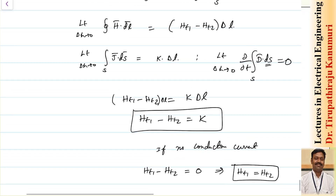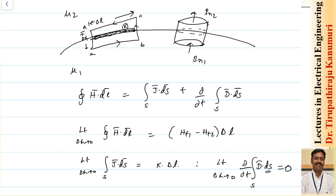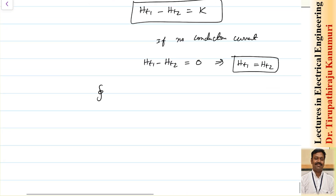Now, for the normal component of B, I take a closed surface with normal components Bn2 and Bn1 on either side, with surface area delta s. I apply the relation: closed integration of B dot ds equals 0.